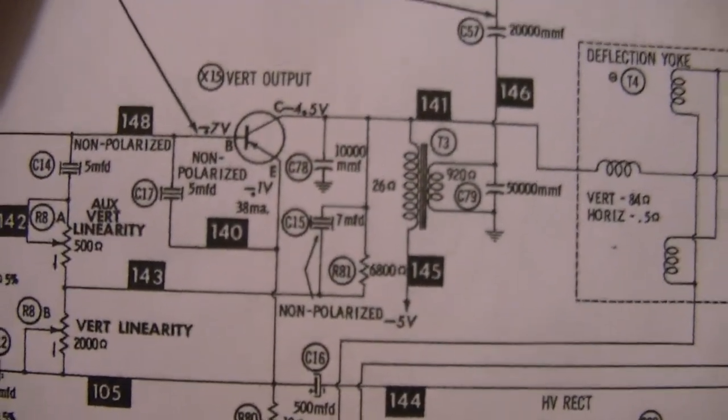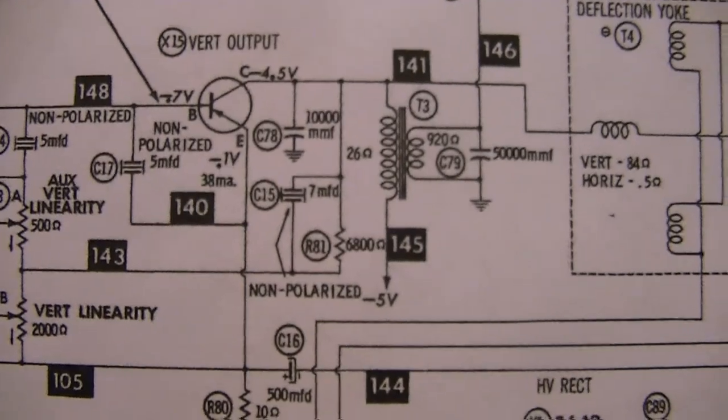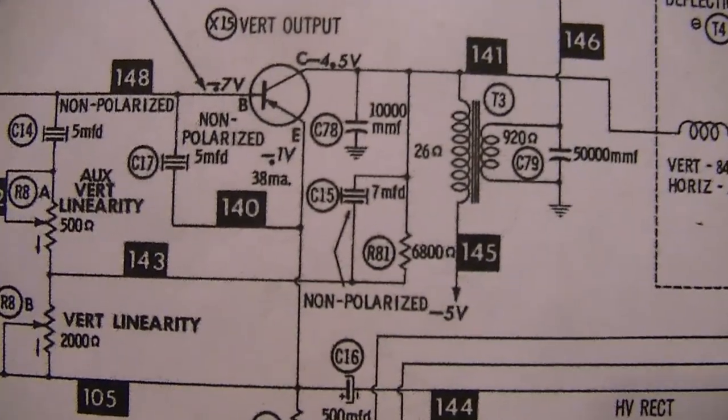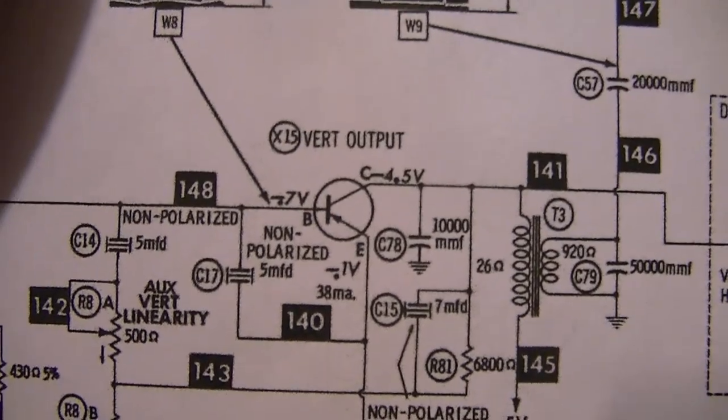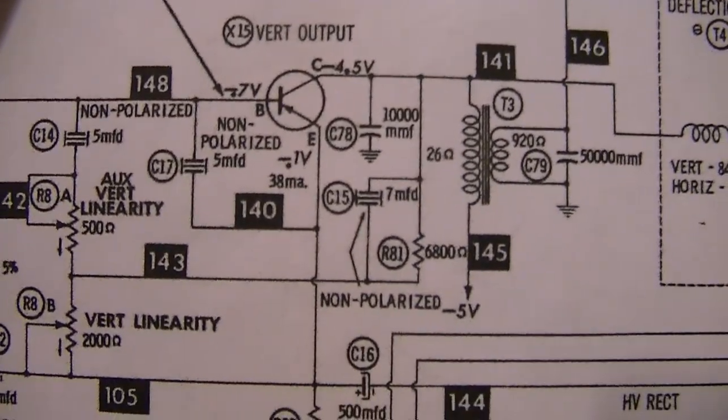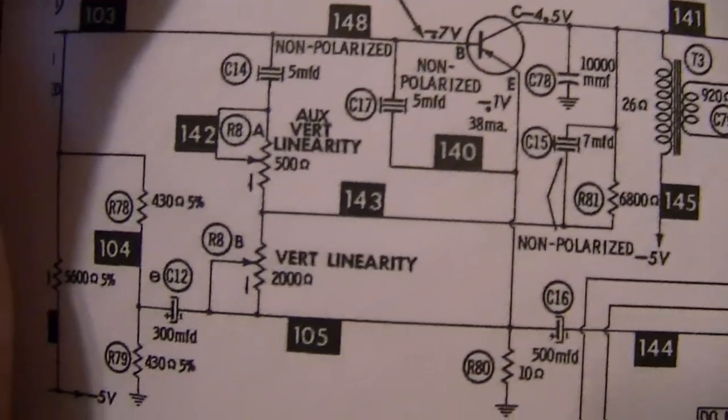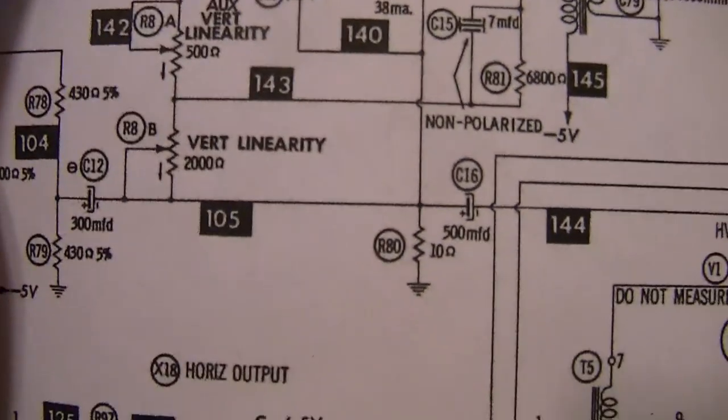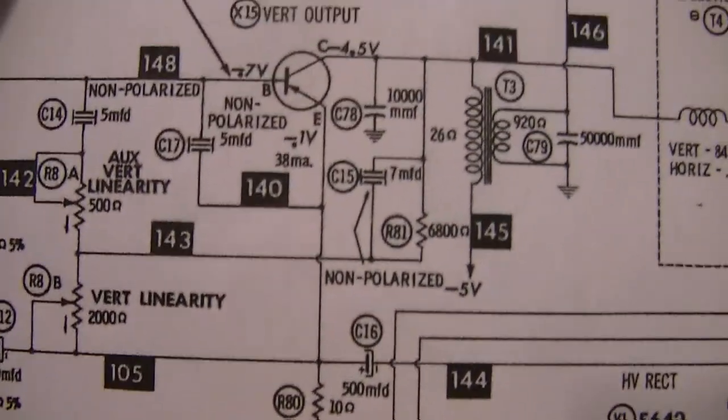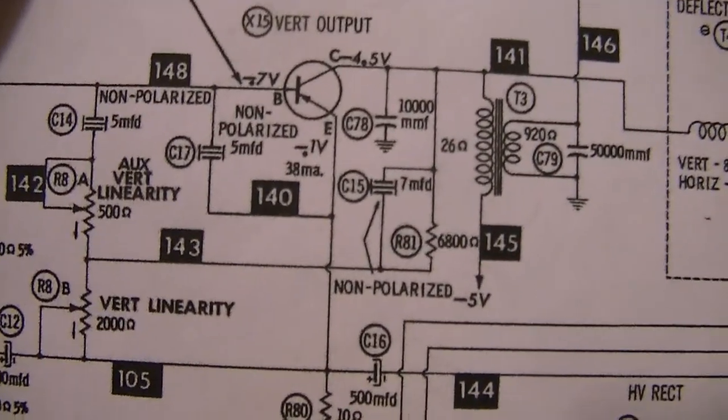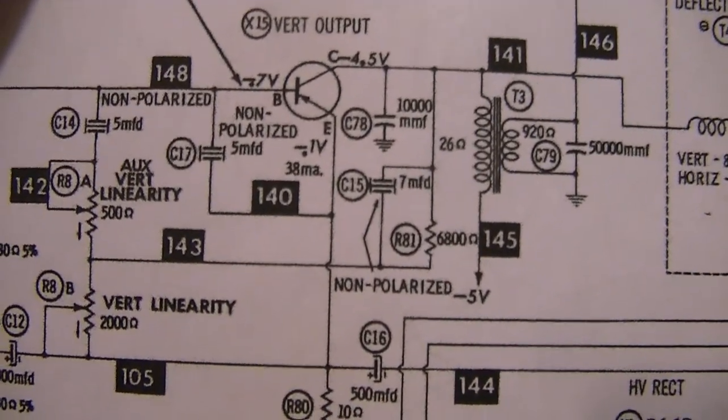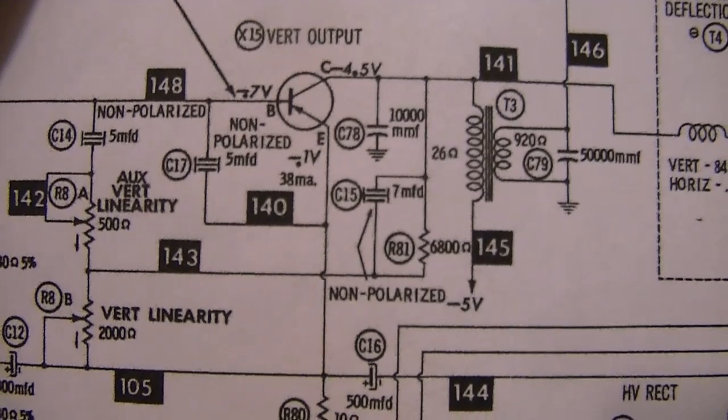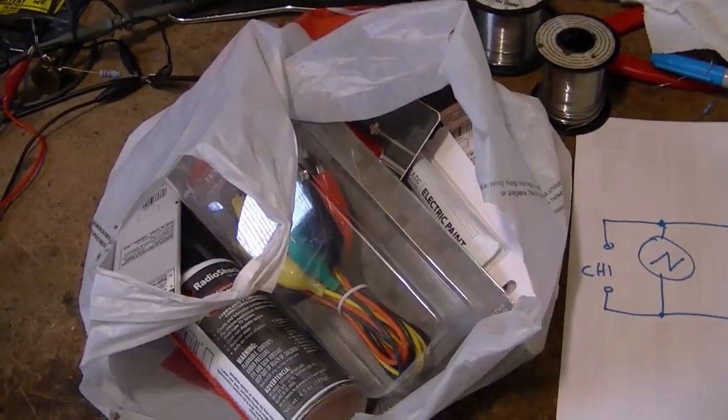Ah, you might be thinking, how do I know there's a DC bias on those caps? Well, check out the 7uF. One end of it's labeled right on the schematic, minus 4.5 volts. The other end is going through vertical linearity, through a small resistor to ground. So, there's going to be a DC bias across that capacitor for sure.